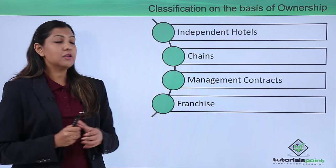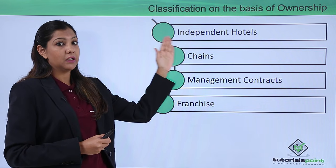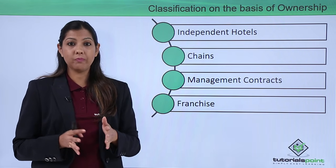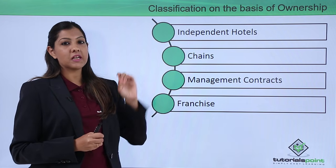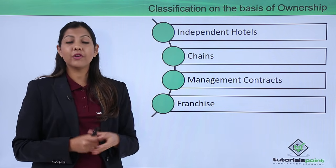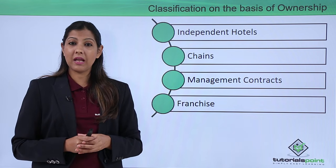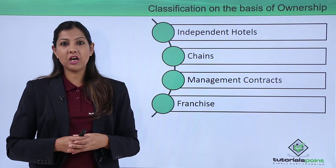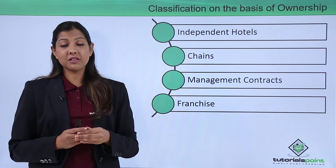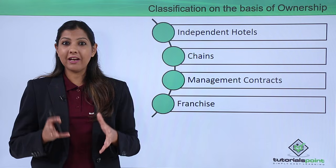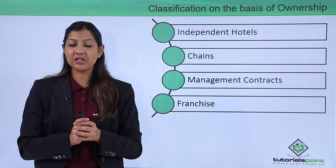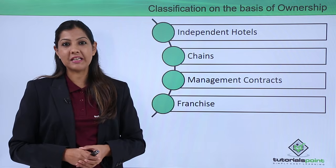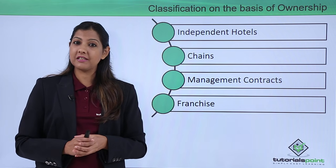Classification based on ownership: independent hotels are run entirely by their own people without any external affiliation. Chain hotels — such as Radisson Blu or JW Marriott — have multiple properties across different cities. Management contract hotels are taken over by contractual companies. Franchisee hotels, such as OYO Rooms or Fab Hotels, operate under a franchisee model with many properties under them.